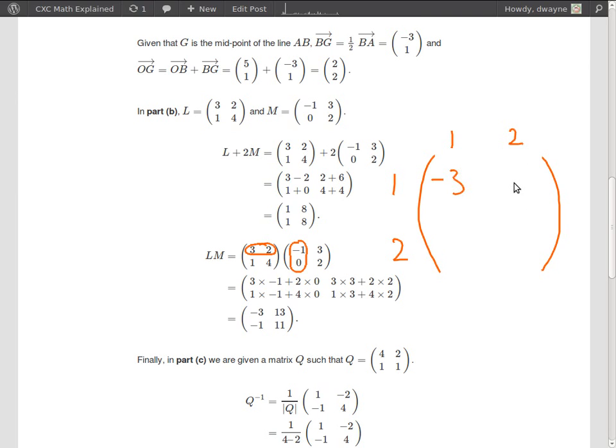To get the entry in position 1, 2, we perform a row by column multiplication of the first row in the first matrix by the second column in the second matrix. And that's 3 by 3 is 9 plus 2 by 2 is 4. 9 plus 4 is 13.